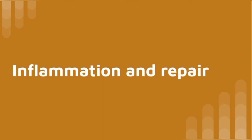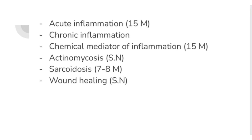Now we will talk about the chapter Inflammation and Repair. In general pathology, inflammation is a very important topic. Acute inflammation is a 15-mark question. We should know how to answer: define inflammation, the signs of inflammation, and the events involved in acute inflammation — that is, the cellular events and vascular events. This is how we can answer the 15-mark question. Then chronic inflammation — it is kind of important but not as much as acute inflammation.